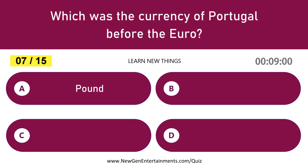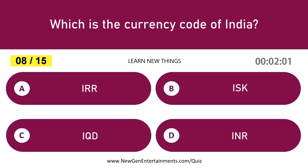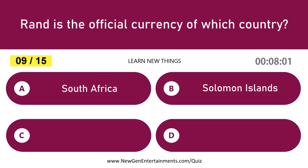Which was the currency of Portugal before the Euro? Escudo. Which is the currency code of India? INR. RAND is the official currency of which country? South Africa.